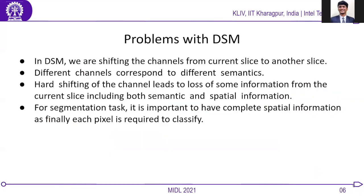Now that we know the working of DSM, there are a few problems due to which the increment in performance in DSM is not huge. In DSM, we are shifting the channels from the current slice to another slice. Different channels correspond to different semantics. Hence, hard shifting of channels leads to loss of some information from the current slice, including both semantic and spatial information. Loss of spatial information leads to a drastic decrement in performance for segmentation tasks, as ultimately for segmentation we have to classify each pixel to its corresponding class.